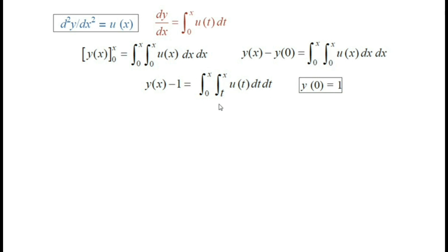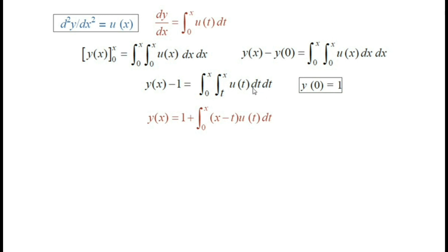Thus y(x) equals 1 plus the integral from 0 to x of (x minus t) u(t) dt, where integrating 1 with respect to t gives t, and evaluating the limits between x and t yields (x minus t).